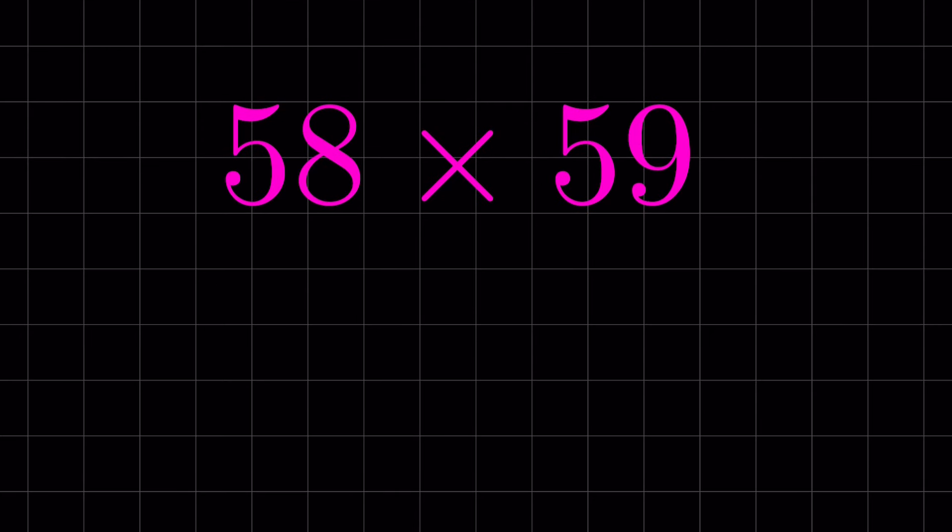So 58 times 59. We have to take a base number which has 0 in it because multiplying with numbers which has 0 in it is easy. Now 58 is closer to 60 and 59 is also closer to 60, so we can take 60 as the base number.